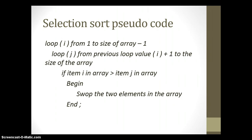Once you have those two loops, all you have to do is check: if the item from the first loop is bigger than the item from the second loop, they are in the incorrect order, and we must do a swap algorithm to swap the two values around. This pseudocode is actually the shorter, easier one to remember compared to other sorting algorithms like bubble sort — quite a nice one to memorise.